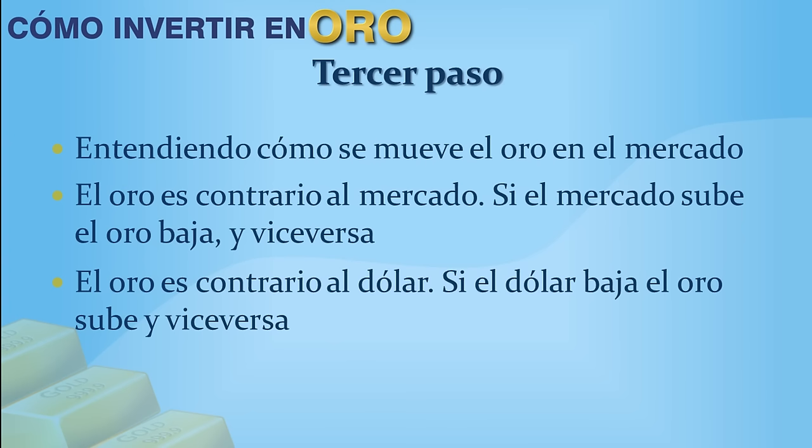A continuación vamos a ver el tercer paso para poder invertir en oro. Hay que entender cómo se mueve el oro en el mercado global. Es tan simple como entender que el oro es contrario al mercado: si el mercado sube — hablo del mercado de Estados Unidos y los mercados globales — pues el oro va a bajar, y viceversa. También es contrario con el dólar, con el índice global del dólar. Si el dólar baja, el oro sube; y si el dólar sube, el oro baja.